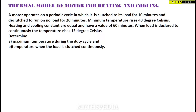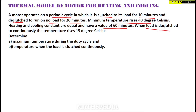In this video we'll be solving one question based on the thermal model of motor heating and cooling. A motor operates on a periodic cycle in which it is clutched to its load for 10 minutes and declutched to run on no load for 20 minutes. The minimum temperature rise is 40 degrees Celsius. Heating and cooling constants are equal at 60 minutes. When the load is declutched continuously, the temperature rises 15 degrees.